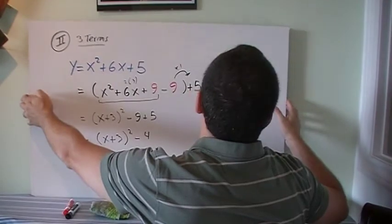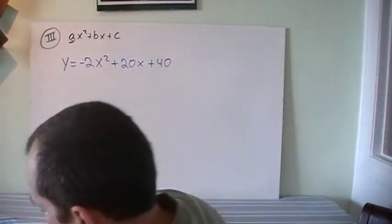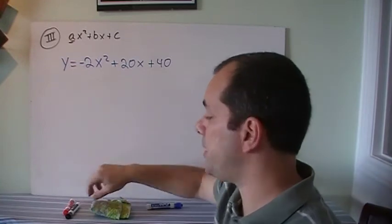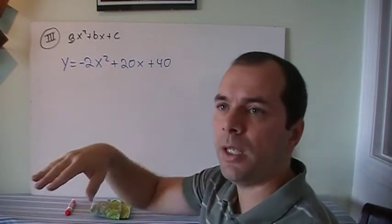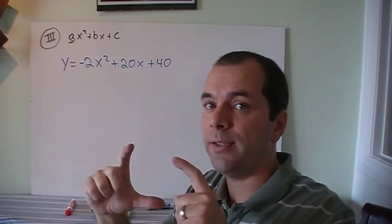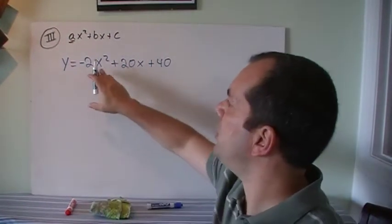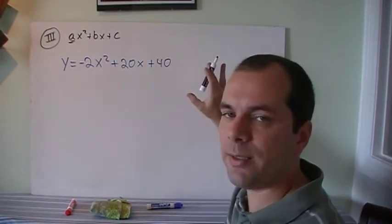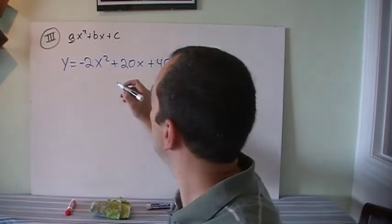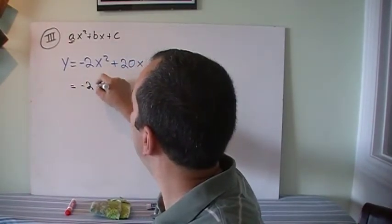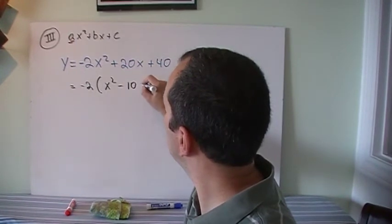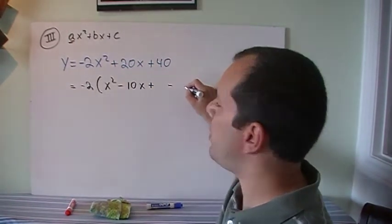The last case, Case 3, is when there's a leading coefficient — a number in front of x squared. I'll do two examples. The extra step here is to factor out that number first, because vertex form needs nothing besides x inside the bracket. So I factor out minus 2 from the first two terms, leaving the last term outside. Even though minus 2 goes into 40, I don't care — just leave it outside. Factoring out minus 2 gives: minus 2 times the quantity x squared minus 10x, plus 40. Now I need to add and subtract a number to make a perfect square inside.